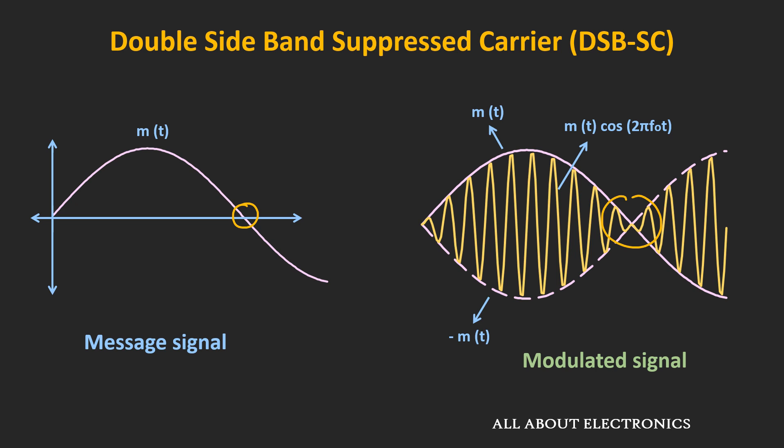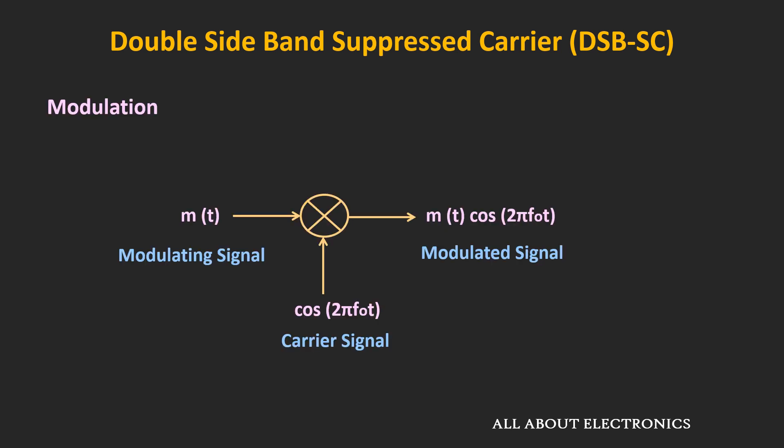Now let's see how to generate the modulated signal for DSBSC. This modulation is basically a multiplication of the carrier signal and the message signal. So if we have a multiplier IC and apply the message signal and the carrier signal as inputs, we can get the modulated output. In the early days, when multiplier ICs were not readily available, other techniques were used to generate modulated signals — we will discuss those in a separate video. But nowadays, using a multiplier IC, it is possible to generate this modulated signal.